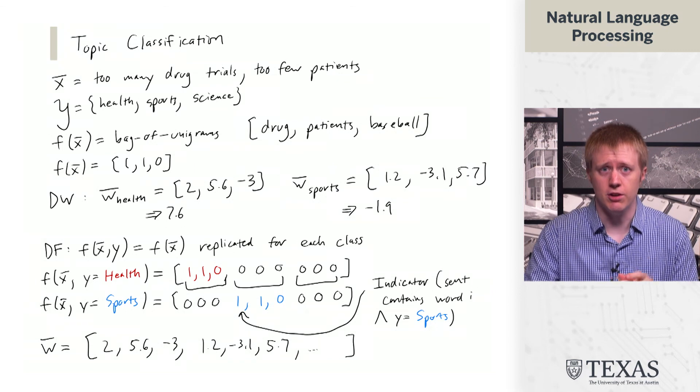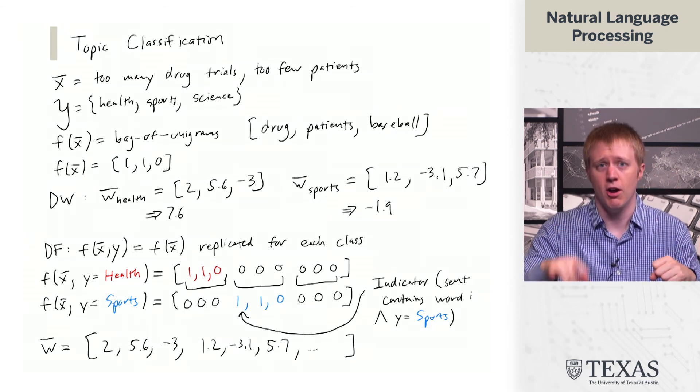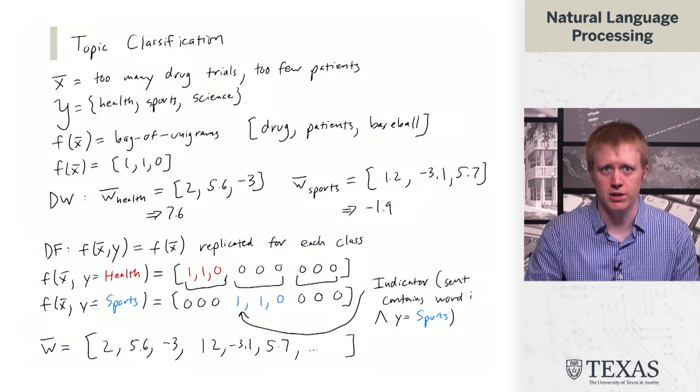Either you have this copy-paste feature vector structure and one weight vector, or you have just a single feature vector and then different weight vectors for each one. That's the end of this segment.